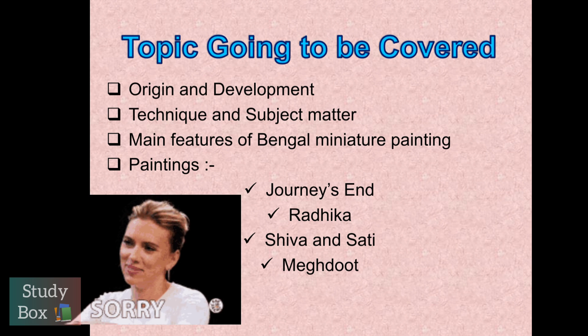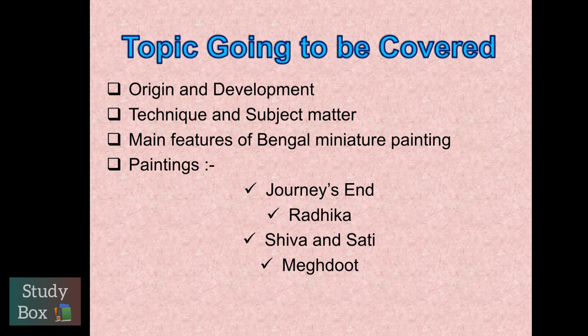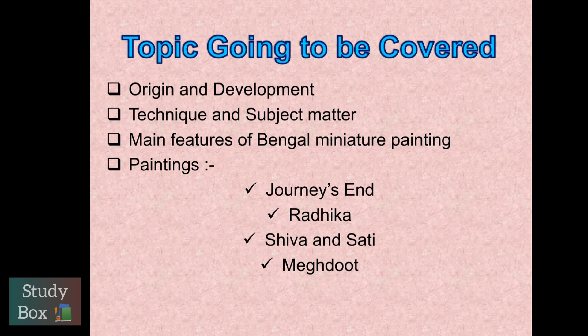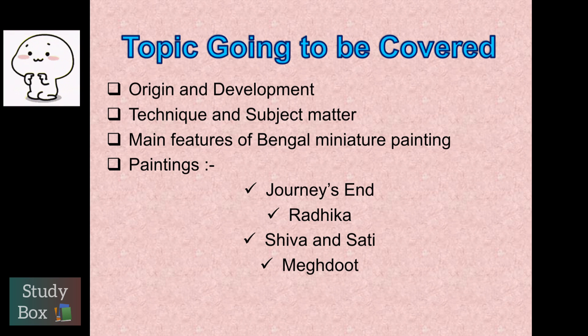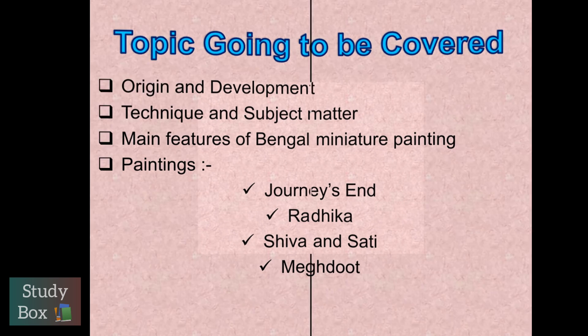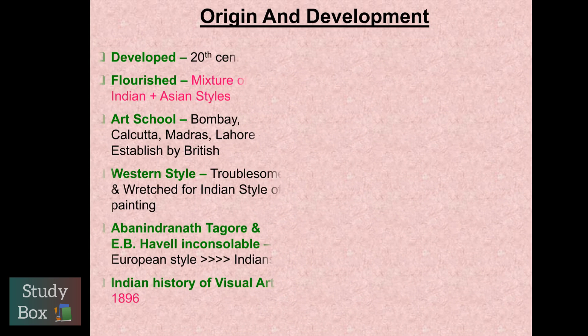We are learning about technique and subject matter. We are learning about the wash and tempera technique - I will explain what is happening. We will also learn about subject matter and main features. In the next video, we will learn about paintings: Churni Zen, Radhika, Shiva in Sati, and Meghaduta. Trust me, this chapter is very interesting.